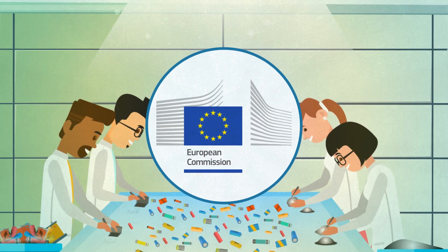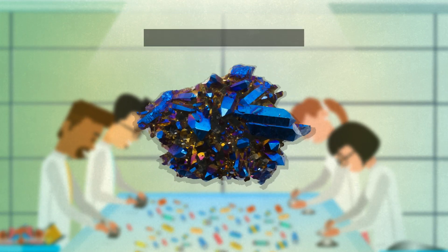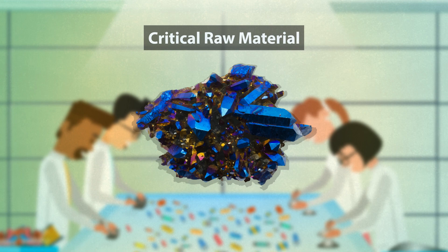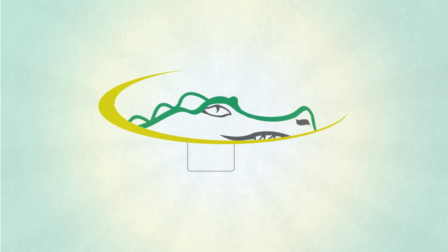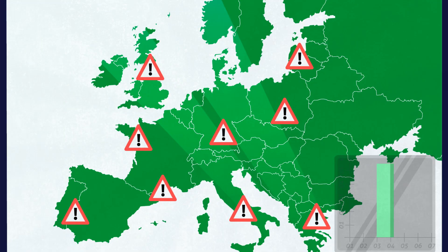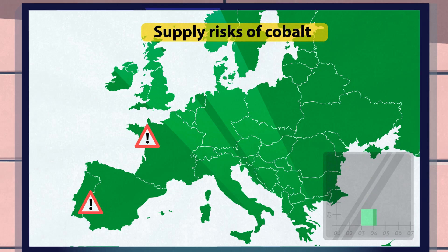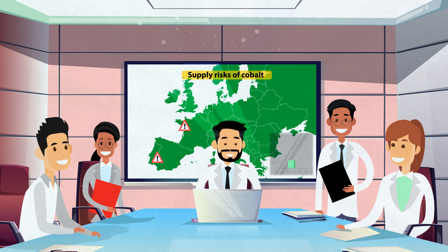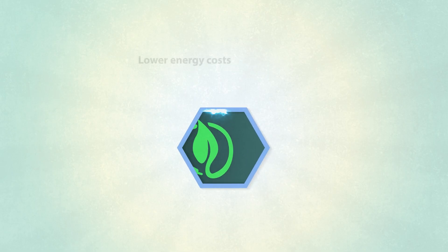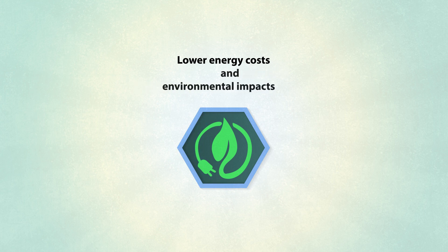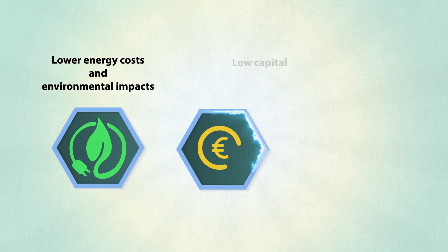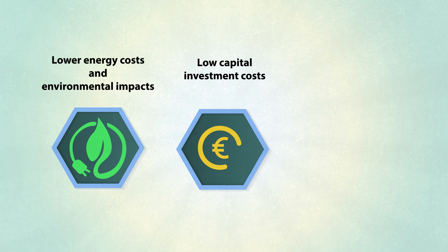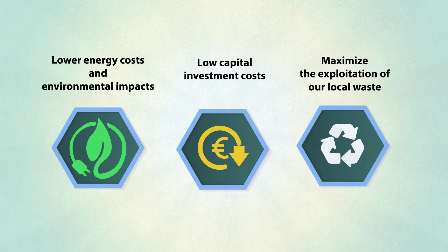As a result, the European Commission considers cobalt a critical raw material. The CROCODILE project aims to drastically reduce the supply risk of cobalt for European industries by developing an innovative and efficient recovery process. We strive to do so with lower energy costs and environmental impacts, providing solutions with low capital investment costs. And finally, we want to maximize the exploitation of our local waste.